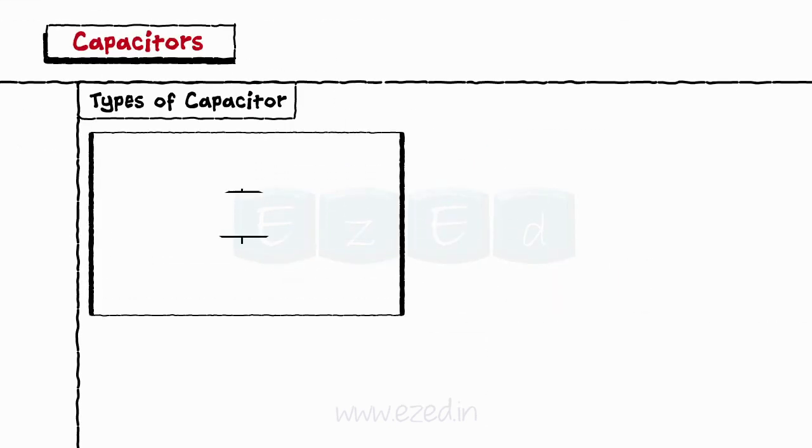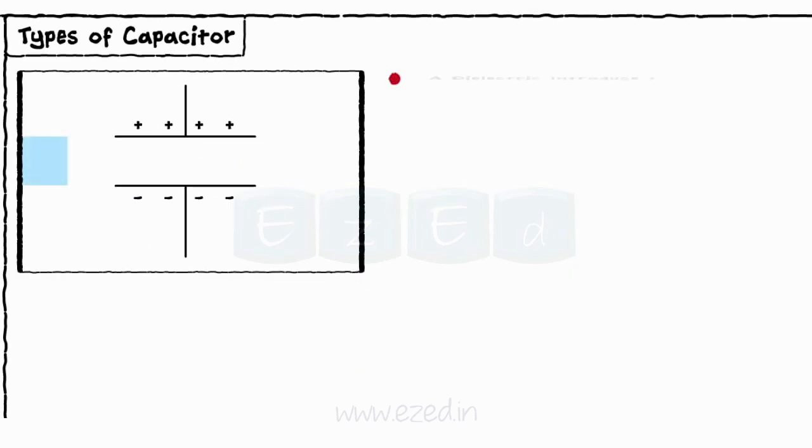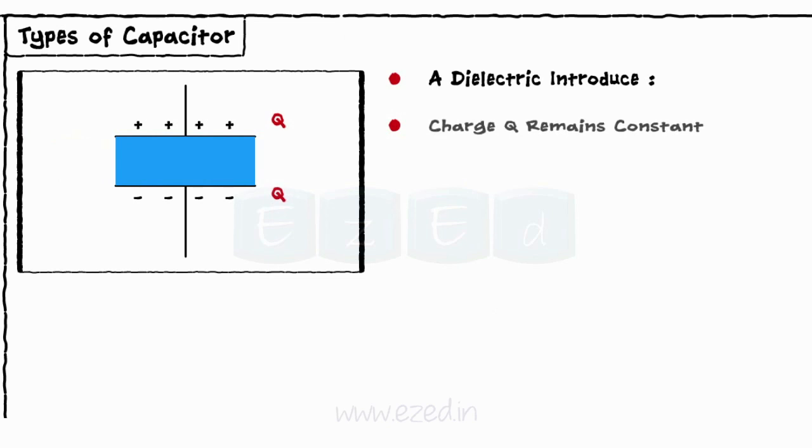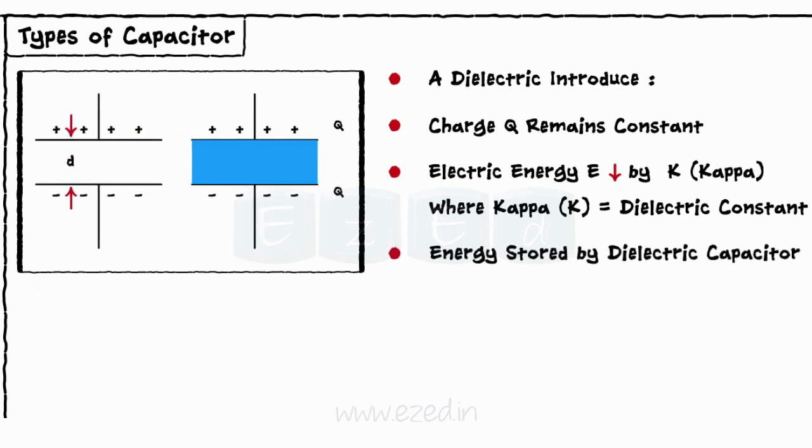Let's assume that a normal capacitor has a charge of plus 4 and minus 4 on each plate. After introducing the dielectric medium between the two plates, the charge remains constant. But the electric energy reduces by factor K or Kappa. This Kappa is called as a dielectric constant. So if the energy stored by the normal capacitor is E0, then the energy stored by the dielectric capacitor becomes Enu equal to E0 by K.